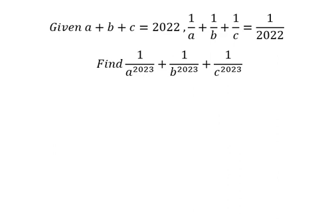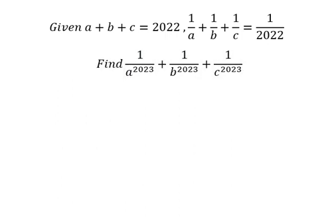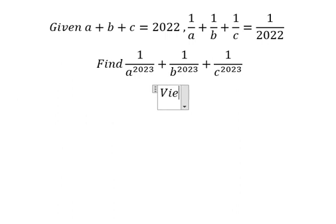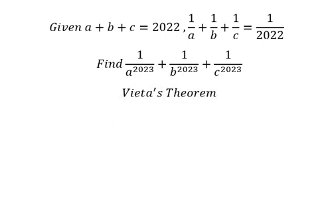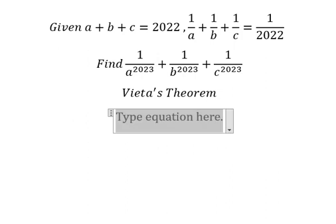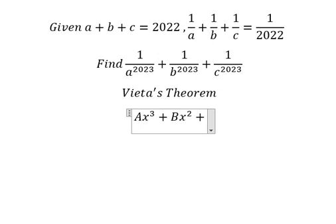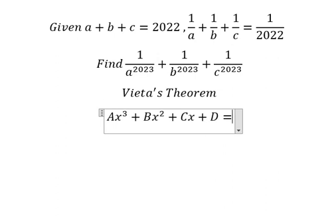Hey guys, welcome back to my channel. Today I will show you how to find the values of this one. In this situation we can apply Vieta's formulas. So I will put about ax to the power of three plus bx squared plus cx plus d equals to zero.